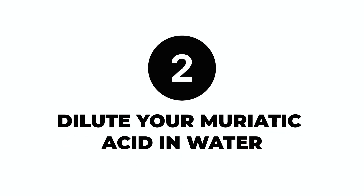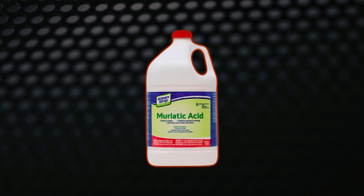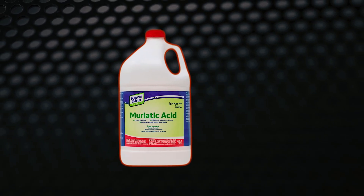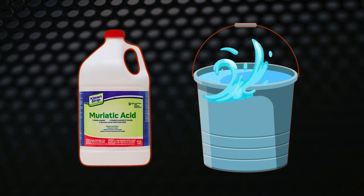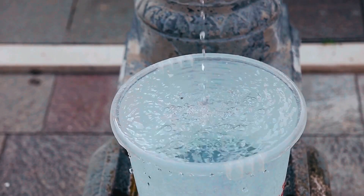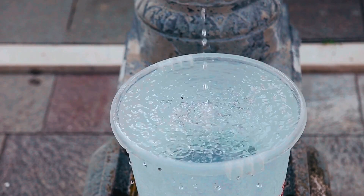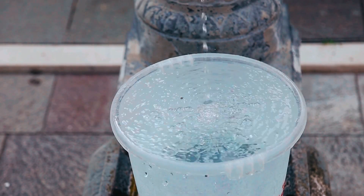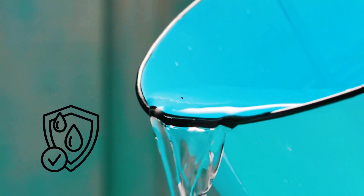Second, dilute your muriatic acid in water. This means adding muriatic acid slowly and carefully into a bucket that's already full of water. Never add water after the acid, as it could cause a reaction that might splash acid on you. Always use an acid-resistant plastic container.